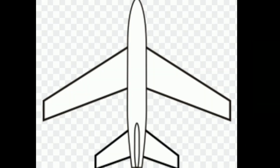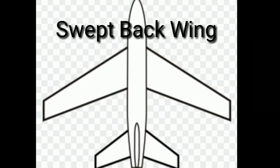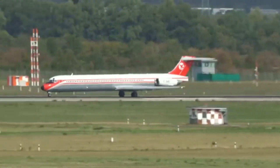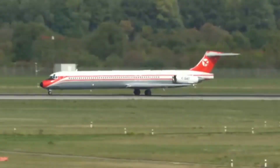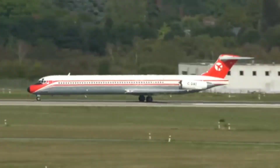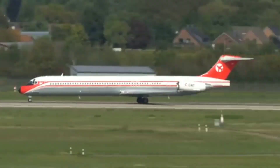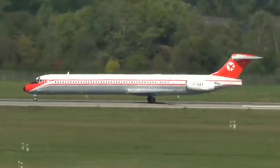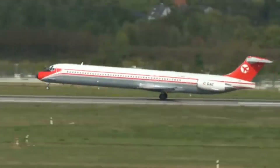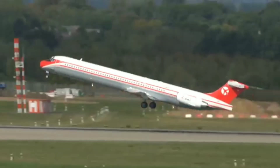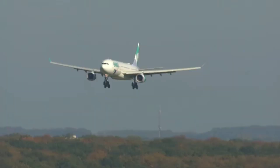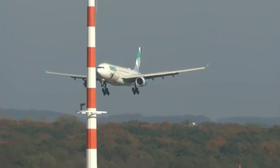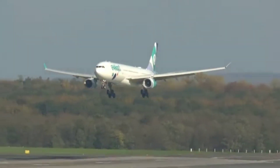The next wing is the swept back wing. In this wing configuration the aircraft's leading edge is swept back, and this helps in delaying the formation of shock waves. This video gives us an overall idea of the different types of wings available in today's world.